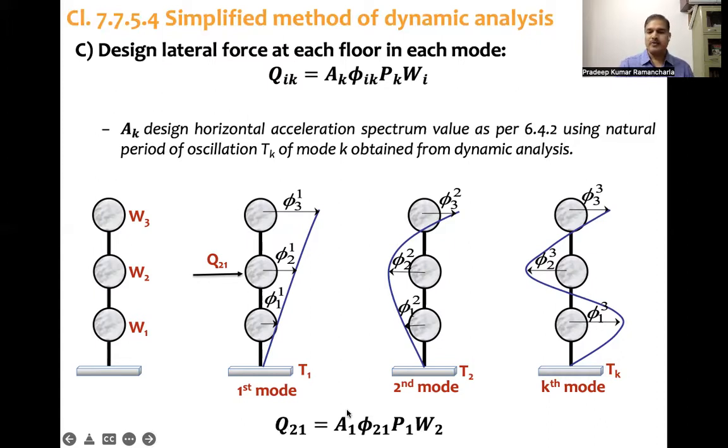In first mode we want to find Q at level two, second floor level. Q21 equals A1, the first mode design horizontal coefficient related to first mode. We take T1 and get sa/g from the design spectrum graph. Then φ21, first mode second level, P1 the modal participation factor, and W2, weight of the W2 level. That's how we get design lateral force at each floor level in each mode.